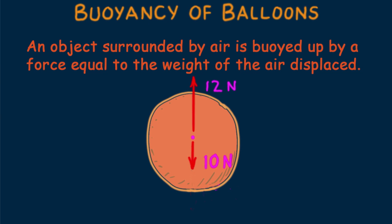An object having a weight less than the weight of an equal volume of air will rise in air. Another way to say this is that any object that has an average density less than the density of air will rise in air. What can we say about gas-filled balloons that rise in air? That's right, their average density is less than the density of the surrounding air.